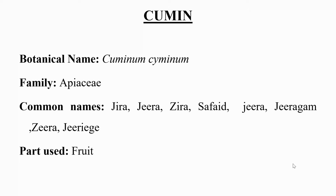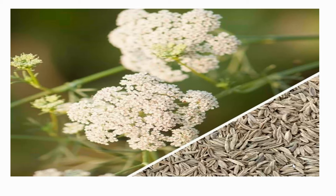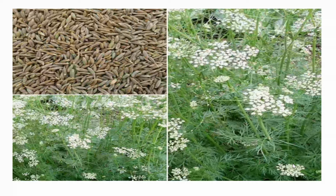The part used is the fruit. Cumin is the dried white fruit with grayish brown color of a small slender annual herb. Cumin seeds impart a distinctive strong flavor and warm sensation on taste buds. This comes from certain groups of essential oils in them. It is used in the cooking of many different cultures in both whole and ground form, and it also has many uses as a traditional medicinal plant.